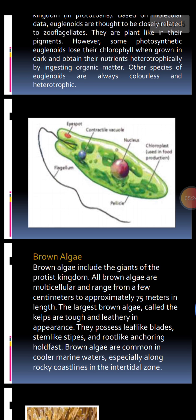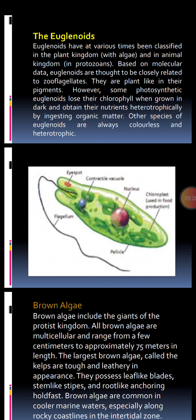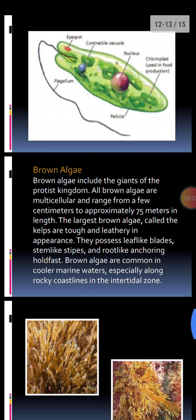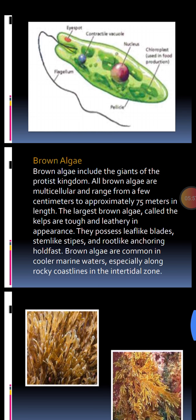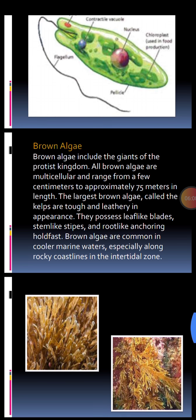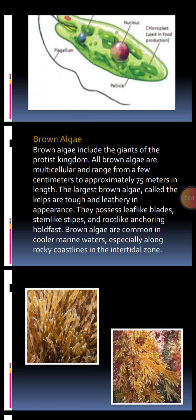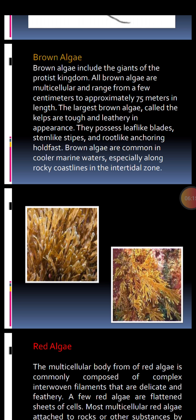A picture of Euglena is shown — they are members of euglenoids and have flagella. Brown algae includes the giants of the protist kingdom. All brown algae are multicellular, ranging from a few centimeters to approximately 75 meters in length. The largest brown algae are called kelps — tough and leathery in appearance. They possess leaf-like structures called blades, stem-like structures called stipes, and root-like anchoring structures called holdfasts. Brown algae are common in cooler marine waters, especially around rocky coastlines and intertidal zones.